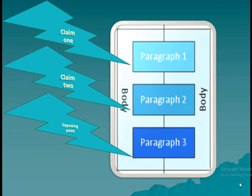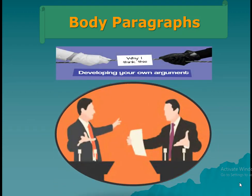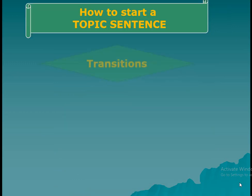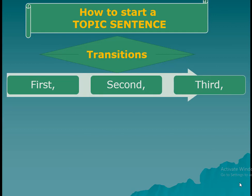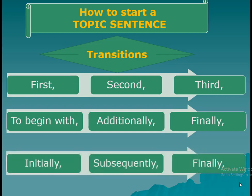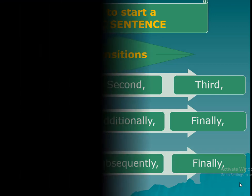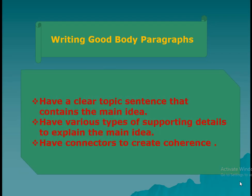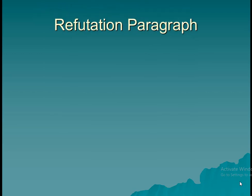Now, the topic and the main idea of your essay are ready. So, it's time to focus on the body of the essay that is going to develop your arguments. The topic sentence may start with transition signals that you may use, such as 'first,' 'second,' 'third,' 'to begin with,' 'additionally,' 'initially,' 'subsequently,' or 'finally.' Remember to capitalize these signals and use a comma after each one. All body paragraphs should have a clear topic sentence containing the main idea, various types of supporting details to explain this main idea, and connectors to create coherence.